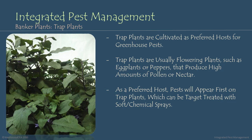This means you can target trap plants for inspections and treatment with soft or chemical sprays. Trap plants are not typically harvested or sold produce, because of how regularly they're sprayed and because they're intentionally used to attract pests — so they're typically not the healthiest or most attractive plants in your growing environment.